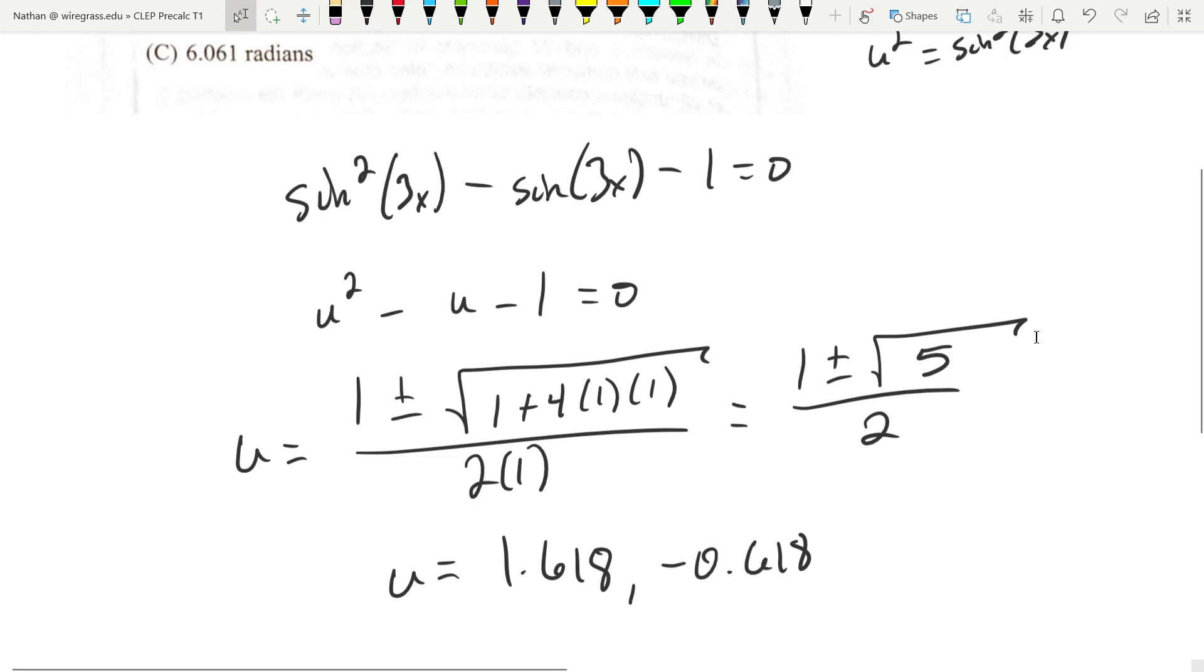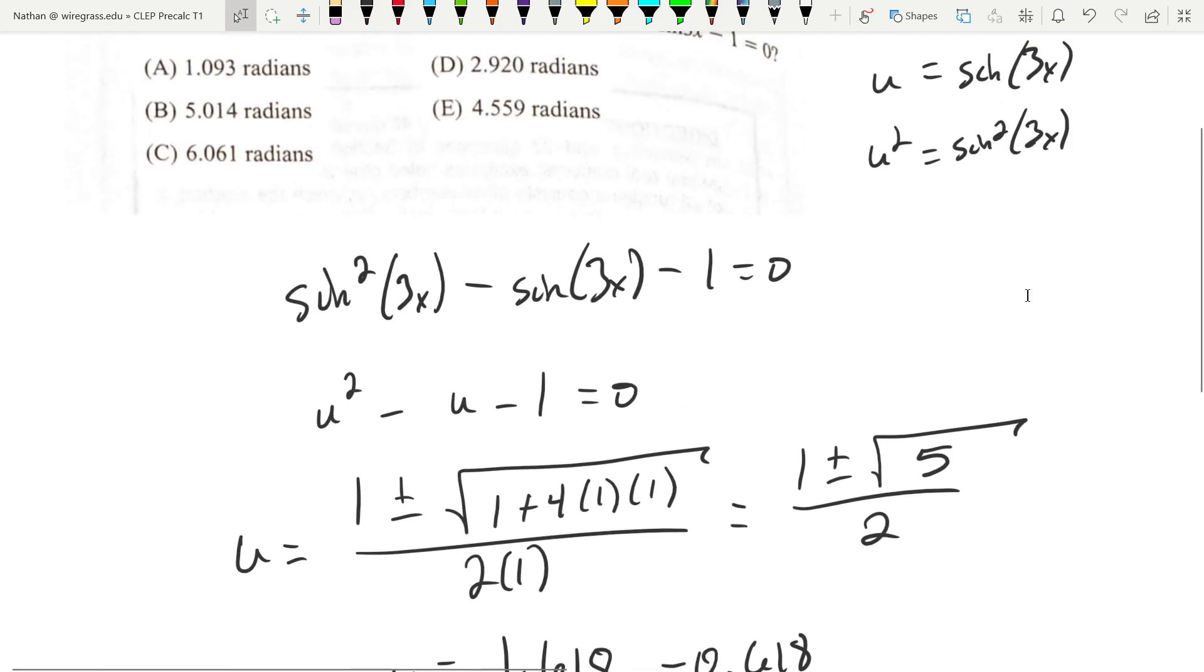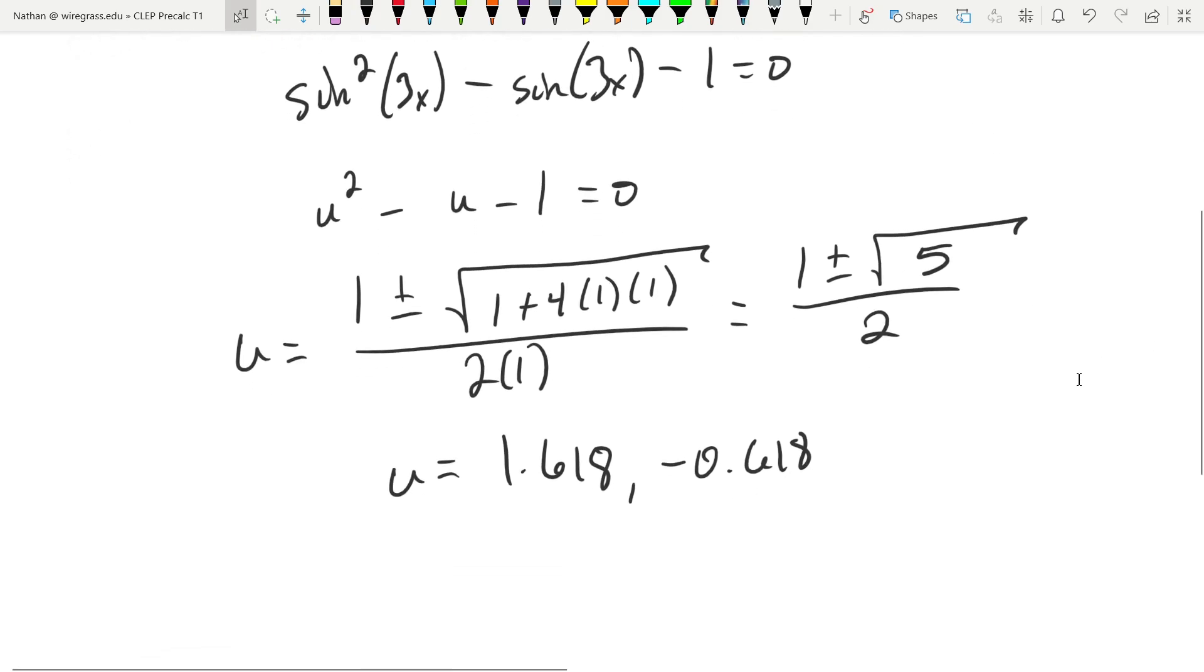Of course, we didn't start with u, so we're going to go back using this substitution, and that's going to be sine of 3x equals 1.618, and sine of 3x equals negative 0.618.